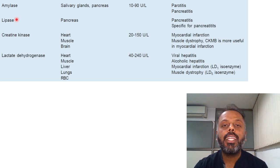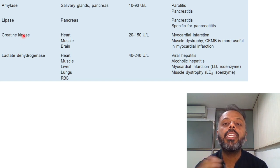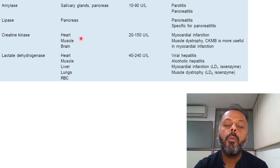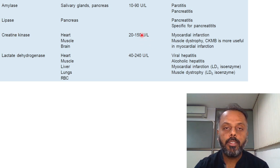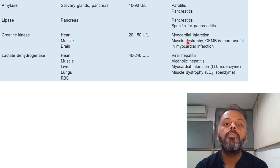The next enzyme is Creatine Kinase. Creatine Kinase converts creatine into creatine phosphate with conversion of one molecule of ATP to ADP. It has 3 isoenzymes: CK-MM located in muscle, CK-BB located in the brain, and CK-MB located in the heart. The normal level is 20 to 150 units per litre. Creatine Kinase levels are elevated in myocardial infarction and muscular dystrophy. CK-MB is the most useful isoenzyme for diagnosing myocardial infarction.